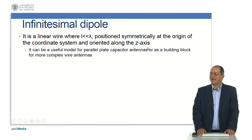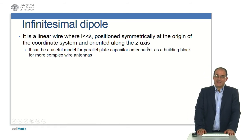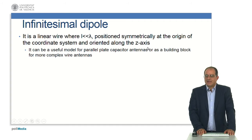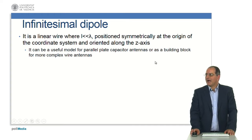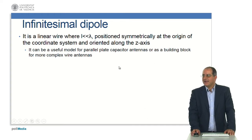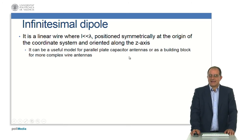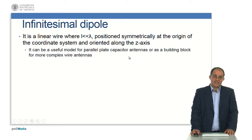What is an infinitesimal dipole? It is a linear wire where its length is much smaller than the corresponding wavelength. For simplicity, we will position this infinitesimal dipole symmetrically at the origin, oriented along the z-axis. It can be very useful to model wire antennas for parallel plate capacitor antennas, or more importantly, as a building block for more complex wire antennas.